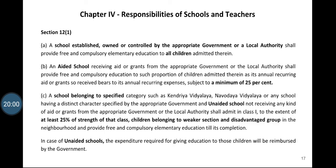Chapter 4 talks about the responsibilities of schools and teachers. It is the longest chapter in the Act, including sections 12 to 28. Section 12 clearly defines the responsibilities of various kinds of schools. Section 12(1) says that a school established, owned, or controlled by the appropriate government or the local authority shall provide free and compulsory elementary education to all children admitted.